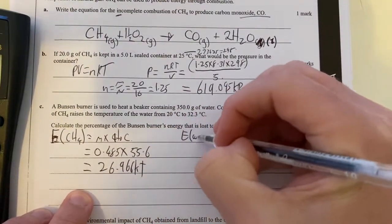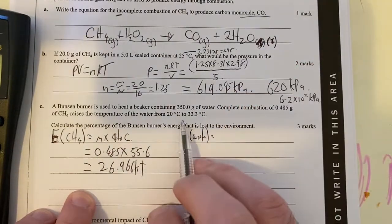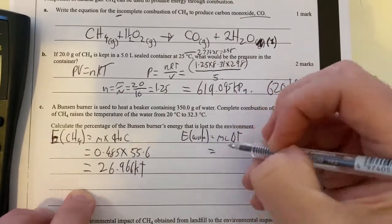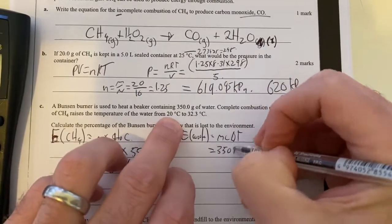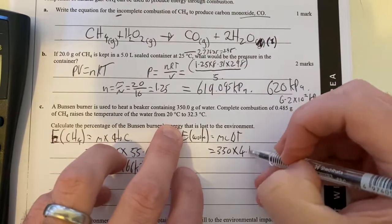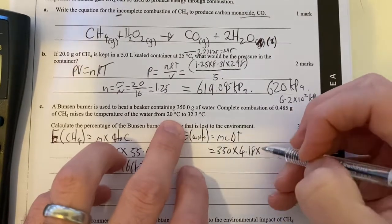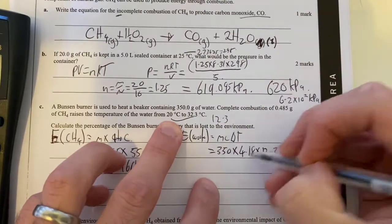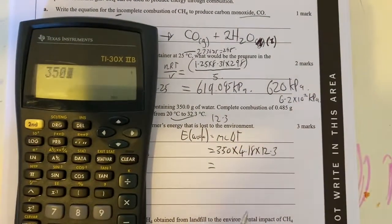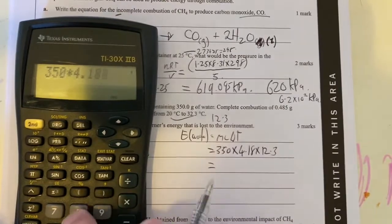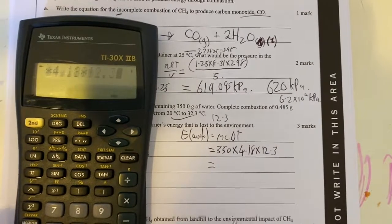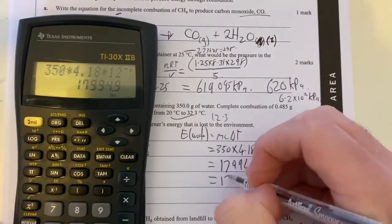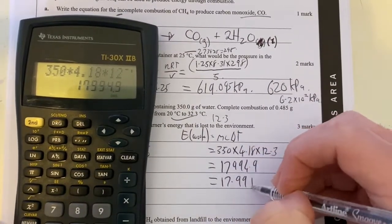The energy in my water, so how much was actually absorbed by the water, will be q equals mc delta t. So it's going to be my mass of my water times by my specific heat capacity, 4.18, times by my temperature change here, which is going to be 12.3. So how much energy was absorbed by my water, 350 times 4.18 times by 12.3, that gives me 17,994.9 is 17.99 kilojoules.